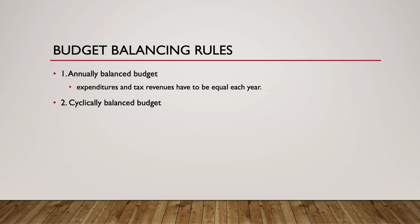Number two is a cyclically balanced budget. Under a cyclically balanced budget, the budget is balanced in sync with the business cycle. When the economy is in an expansionary phase, government restricts spending and raises taxes. And when the economy is in a contractionary phase, government increases spending and lowers taxes. A cyclically balanced budget is difficult to enforce and difficult to implement effectively due to time lags.